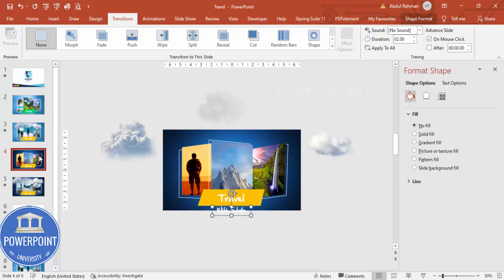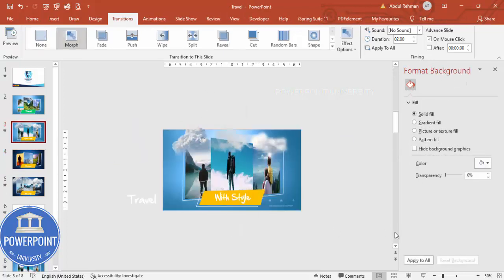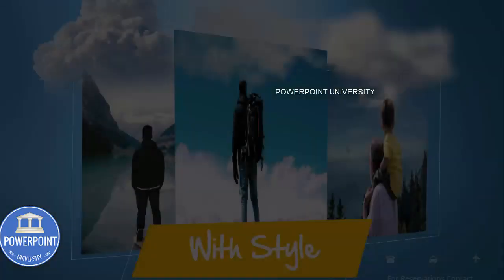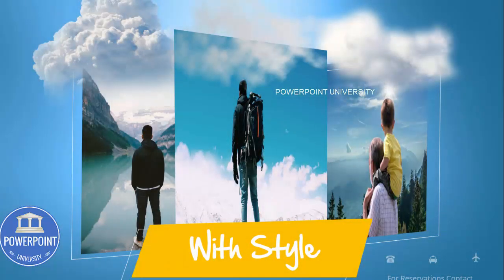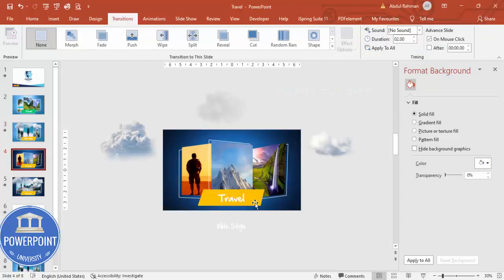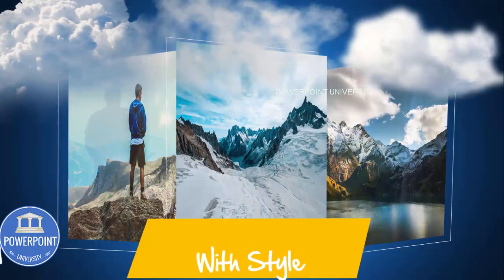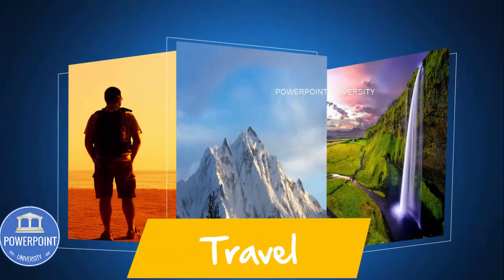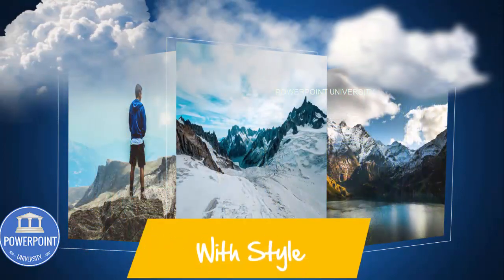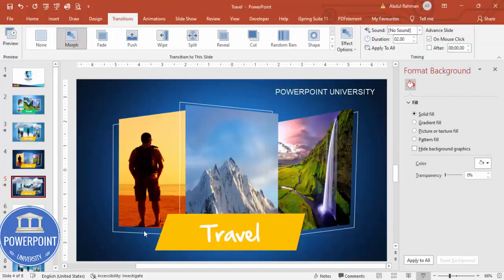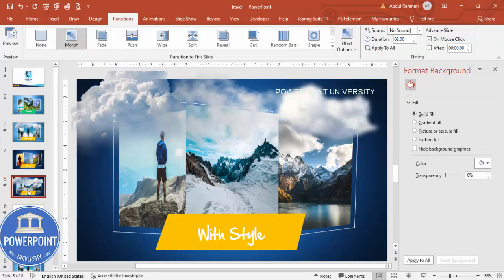Paste the copied elements onto the second slide and position them. Copy the 'Travel with Style' text with Ctrl+C and paste it onto the second slide. Now preview the result — on the first slide click through and you'll see the Morph transition animate the images smoothly into the second slide. You can add as many slides as you want using this Morph transition technique.